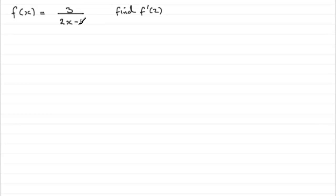So when I get something like this, I would want to bring the 2x minus 1 up to the top as a power, 2x minus 1 to the power minus 1. Let's just write that in first of all: this is equal to 3 multiplied by 2x minus 1 all to the power minus 1.